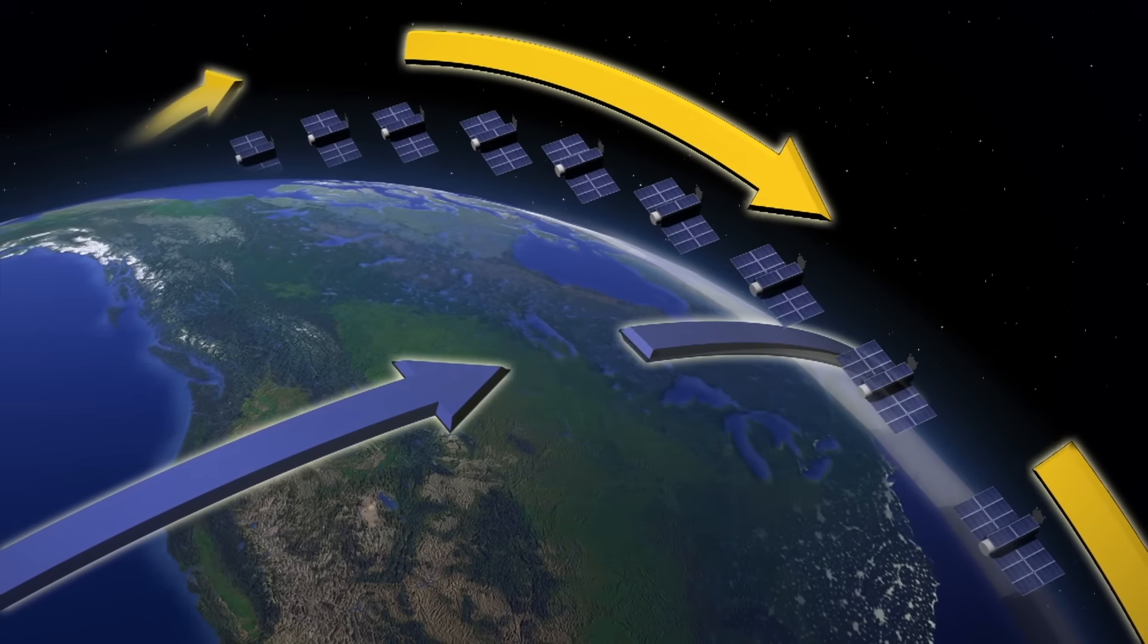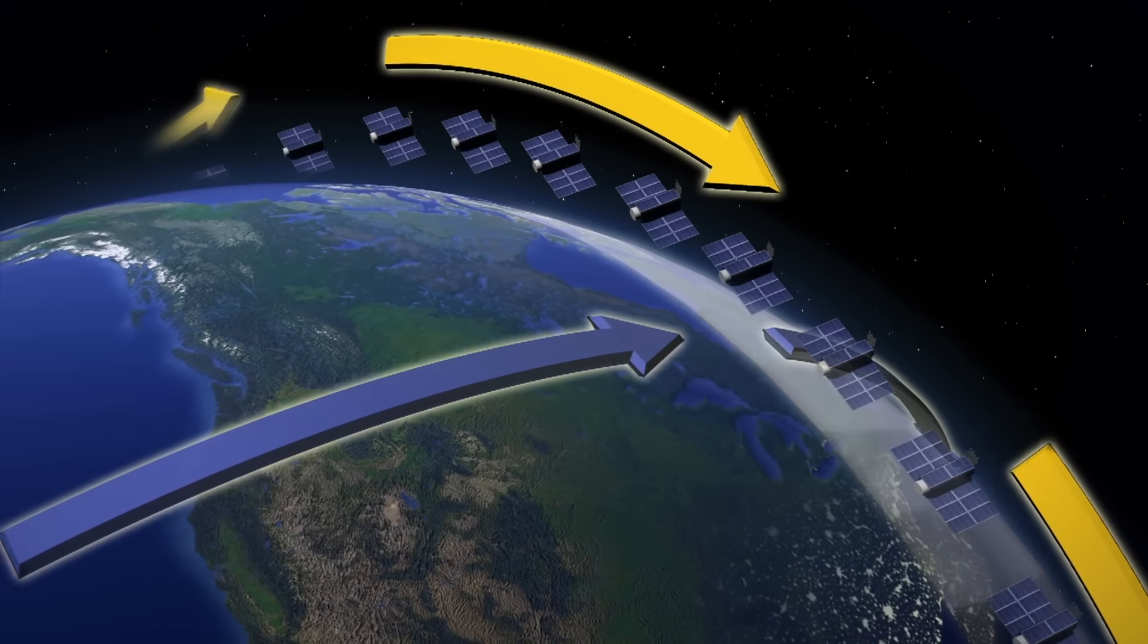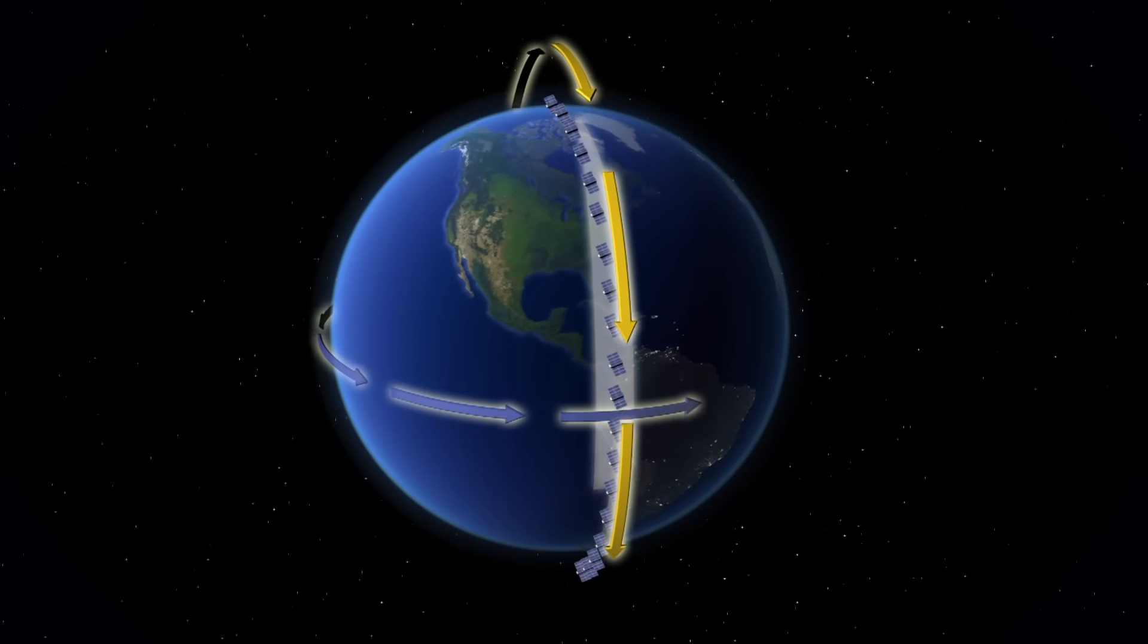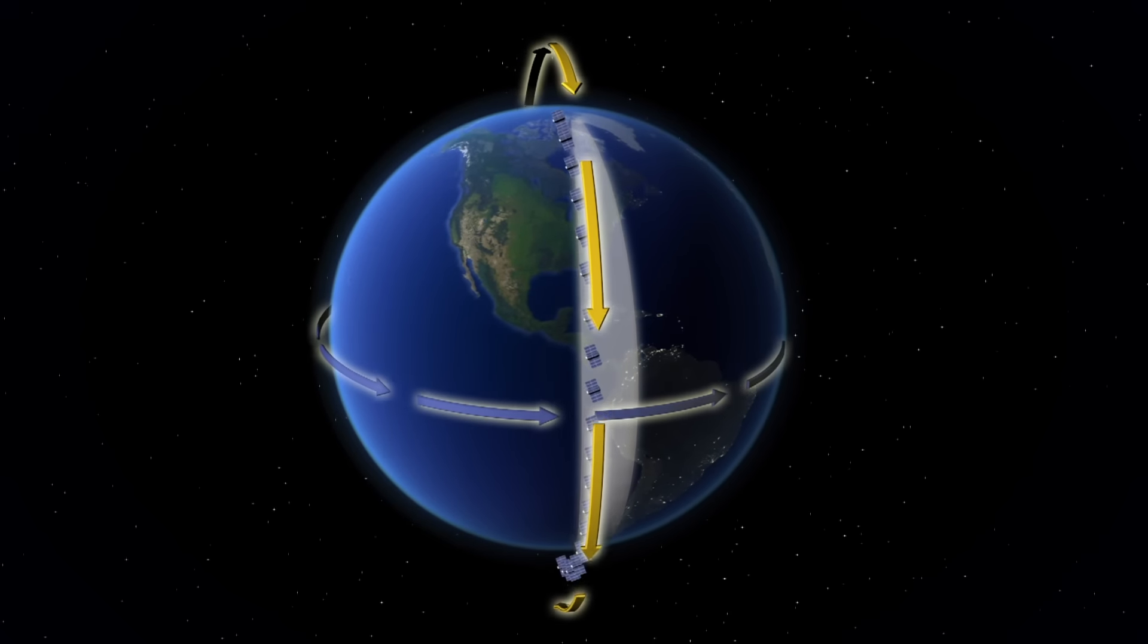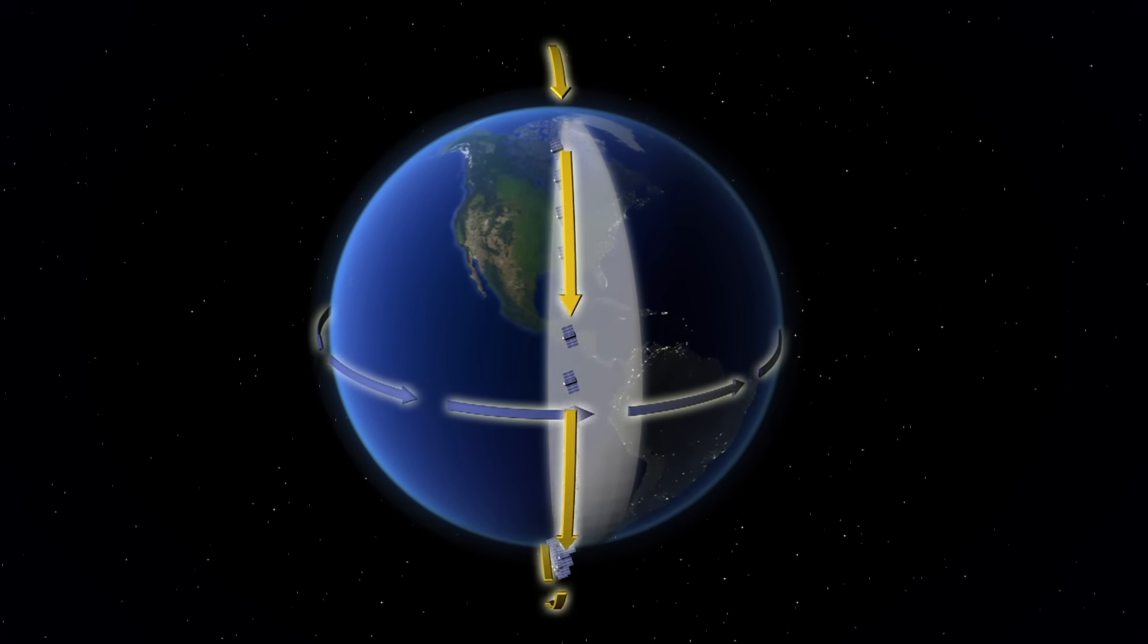Combined with 12 Dove satellites already in space, 100 satellites in total will fly north to south as the Earth rotates beneath them to form a line-scanner constellation of satellites.